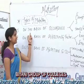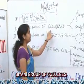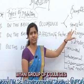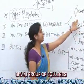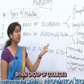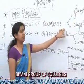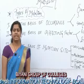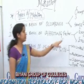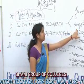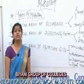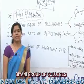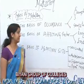First, on the basis of occurrence, mutations are divided into two types: gametic mutation and somatic mutation. Gametic mutation occurs in germ cells; these are heritable and expressed in the next generation. Somatic mutation occurs in somatic cells; these are non-heritable and end with the death of the organism.